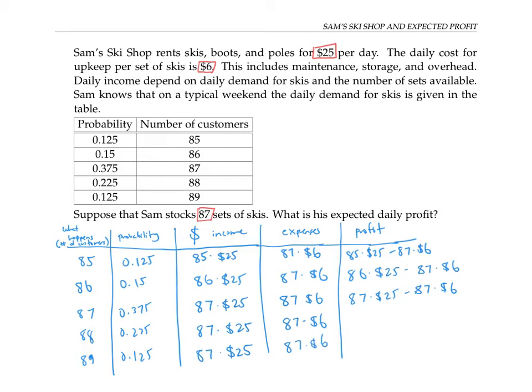So his profit in the last three cases is going to be the same each time. Now to figure out the expected value, his expected profit, I'm going to need to multiply my profits in each situation by the probability of that situation, and then add those all up.